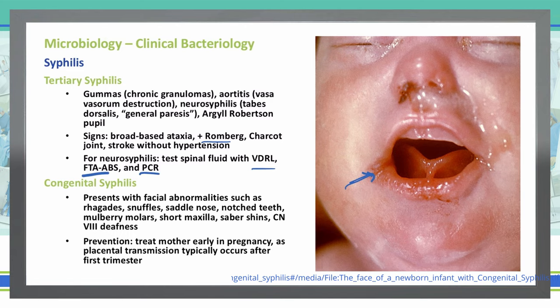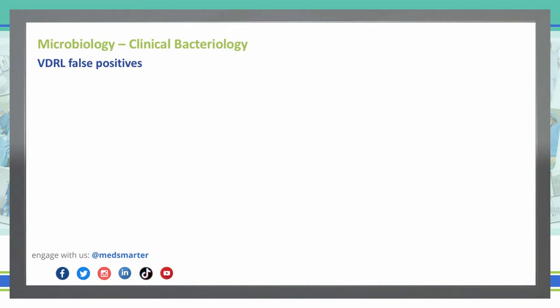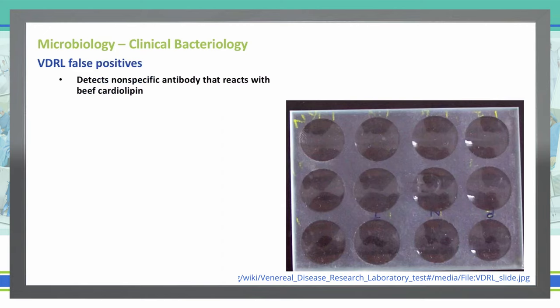Following that discussion on syphilis, let's talk about VDRL false positives. The VDRL, or venereal disease research lab, is the test we use for syphilis, and it detects non-specific antibodies that react with beef cardiolipin. It's very inexpensive and widely available, but the problem is we can get false positives. These occur alongside viral infections like chicken pox and measles, as well as lymphomas, tuberculosis, malaria, endocarditis, connective tissue disease, and pregnancy.